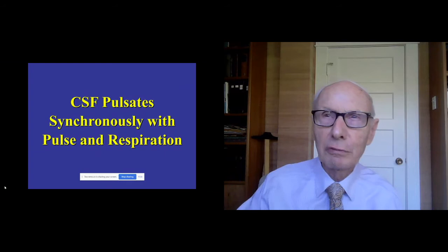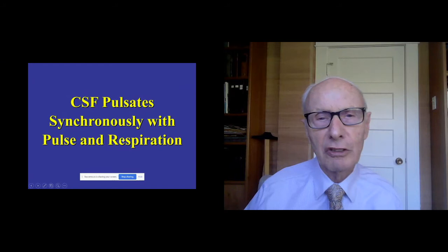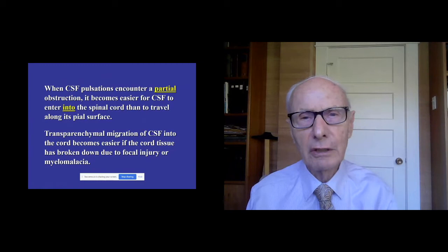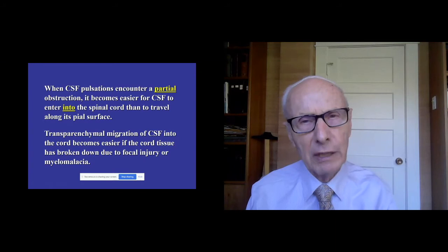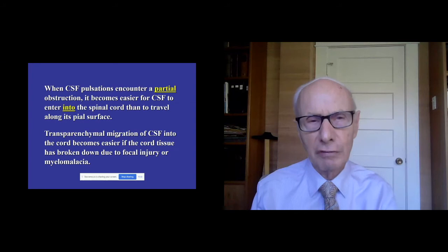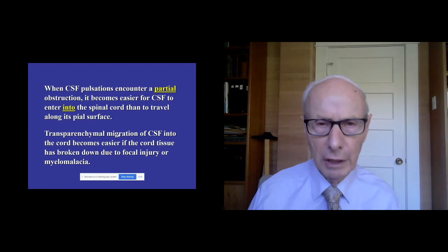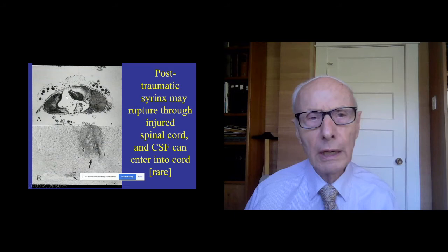The spinal fluid resumes normal activity when the pulsation stops, but it is intermittently pulsing. When this pulsation encounters a partial obstruction to the spinal fluid, it becomes easier for the spinal fluid to enter into the spinal cord than to travel alongside its outer surface. This is particularly true if the spinal cord has been injured. The fluid can enter through a hole, and it can both enter and leave this fluid cavity all the time.